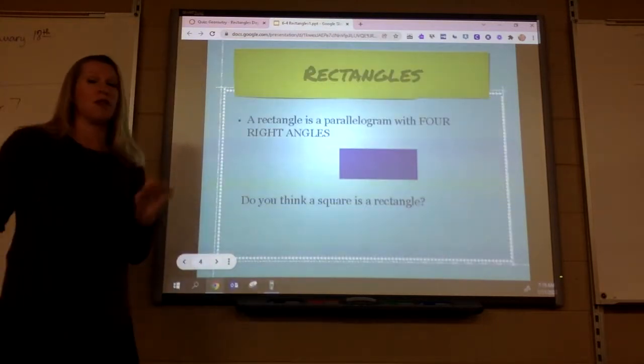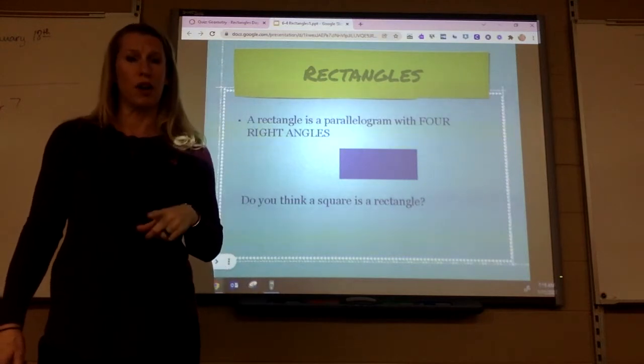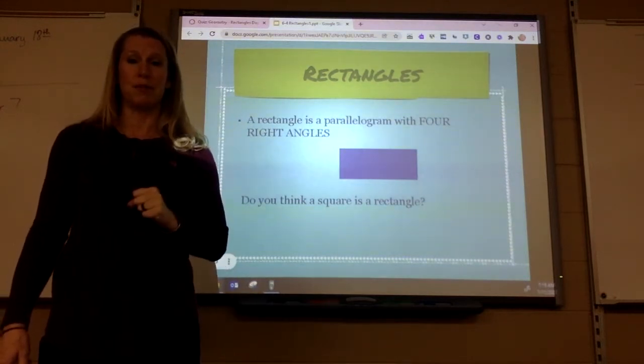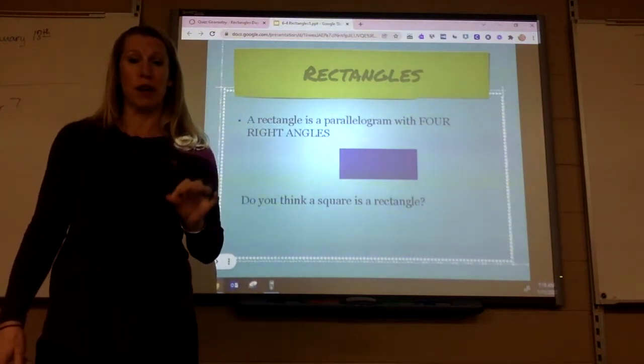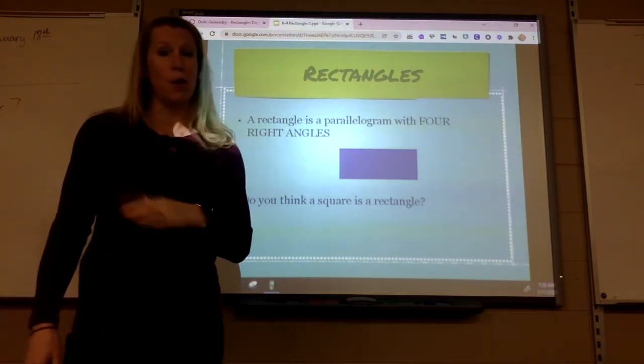Since a rectangle is a parallelogram with four right angles, do you think that a square is a rectangle? Well does a square have four right angles? It does, so a square is always a rectangle.